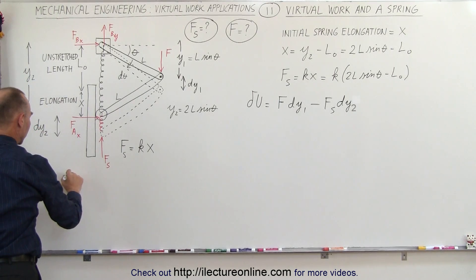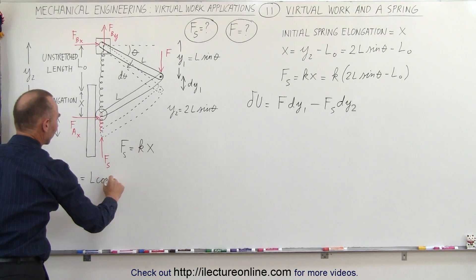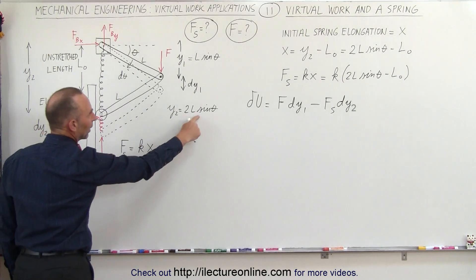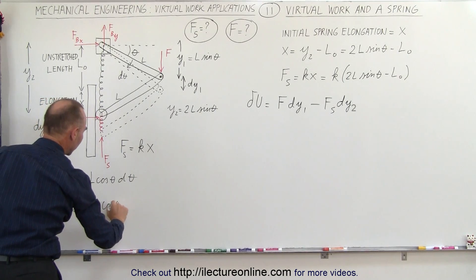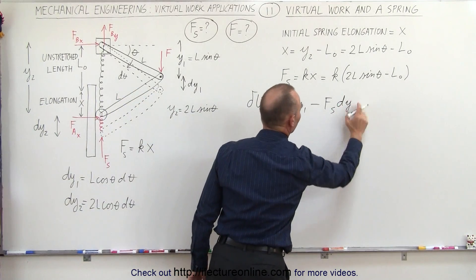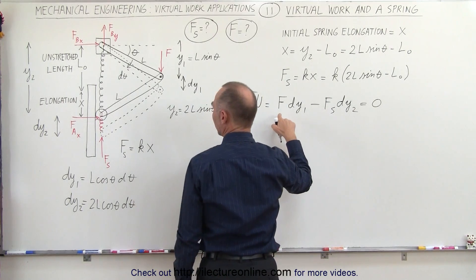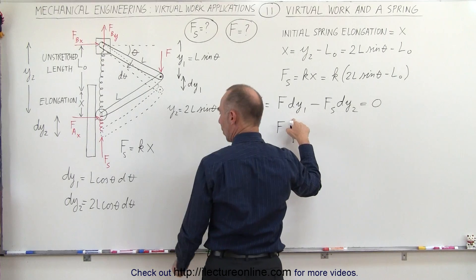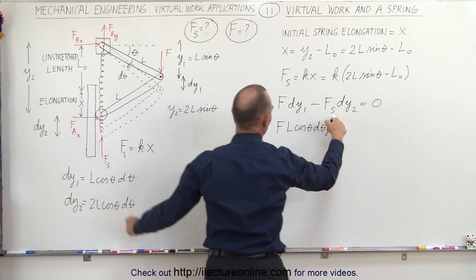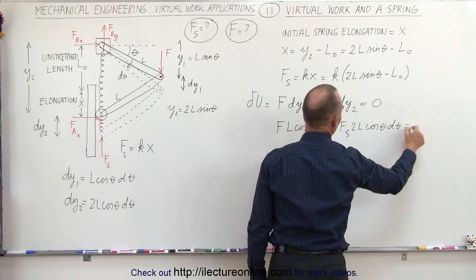Taking the derivative, dy1 equals the derivative of L sine theta, which gives L cosine theta d theta. And dy2 is twice that: since y2 equals 2L sine theta, dy2 equals 2L cosine theta d theta. Substituting into the virtual work equation: F times L cosine theta d theta minus Fs times 2L cosine theta d theta equals zero.